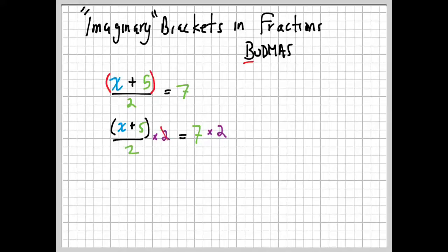The 2's cancel out on the left and we're just left with X plus 5 on the left. Since there's nothing in the bottom, we don't need to write it as a fraction anymore. On the right we have 14—7 times 2 is 14. Now nice and easy: X plus 5 equals 14. You could probably do that in your head, but we just subtract 5 from both sides. The 5s cancel out and we get X equals 9—14 minus 5 is 9.